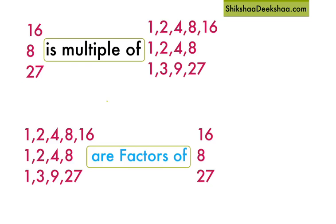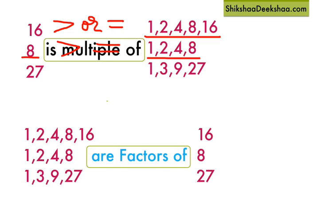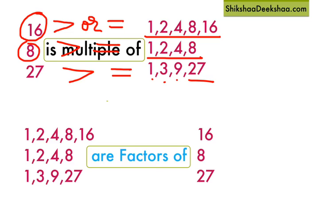You can also see that 16 is greater than or equal to these numbers. 8 is also greater than or equal to these numbers. And 27 is also greater than 1, 3, 9, and equal to 27. So we say that multiples of a number are always greater than or equal to the number itself.